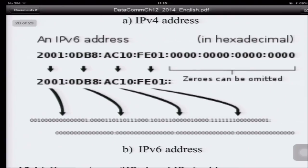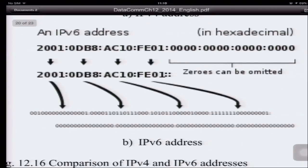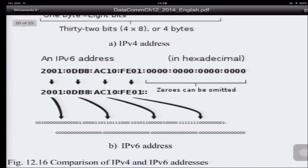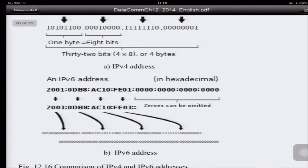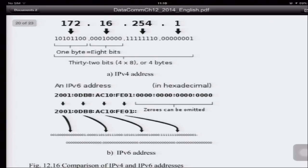Each of the 8 groups of hexadecimal digits in an IPv6 address consists of 16 bits. So you have 8 groups times 16 bits each. The address is much, much longer than IPv4. And if you have one more bit, this means you have twice the number of addresses — so with almost 100 more bits, you have a lot more addresses.